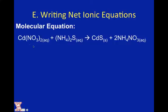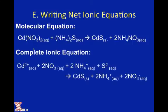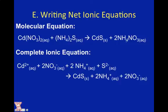Now, how do we write a complete ionic equation? Anything that is aqueous, we write as dissociated. So we have cadmium 2+ (aq) plus two nitrate⁻ (aq), plus two ammonium⁺ (aq) plus sulfide 2− (aq). When we dissociate, we must remember to keep the charges. Since cadmium sulfide is a solid, we cannot dissociate it — it stays together. The products are cadmium sulfide (s) plus two ammonium⁺ (aq) plus two nitrate⁻ (aq).